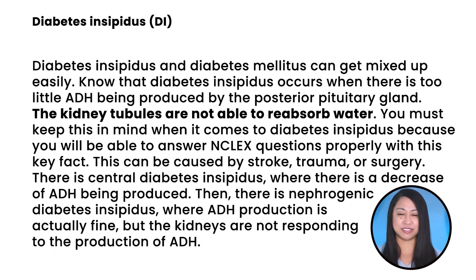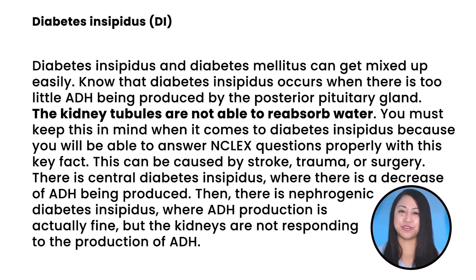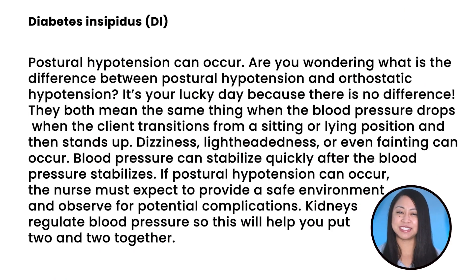Onto diabetes insipidus, abbreviated to DI. Diabetes insipidus and diabetes mellitus can get mixed up easily. Diabetes insipidus occurs when there is too little ADH being produced by the posterior pituitary gland, and the kidney tubules are not able to reabsorb water. This can be caused by stroke, trauma, or surgery. There is central diabetes insipidus where there is a decrease of ADH being produced. Then there is nephrogenic diabetes insipidus when ADH production is fine, but the kidneys are not responding to ADH. Postural hypotension can also occur.